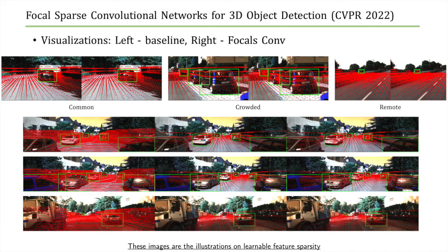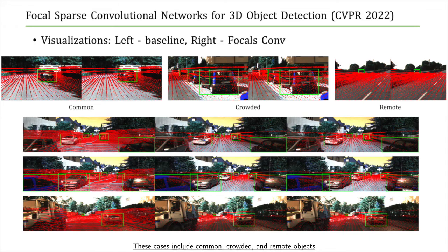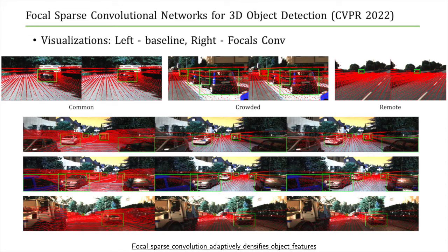These images illustrate learnable feature sparsity. We project 3D voxel centers from the backbone output onto 2D image planes. Cases include common, crowded, and remote objects. In each pair, the left shows plain sparse CNN and the right shows focal sparse CNN. Focal sparse convolution adaptively densifies object features without introducing redundant background features.